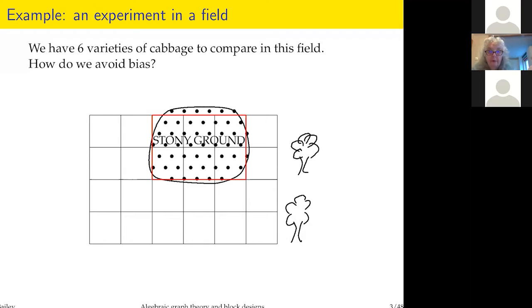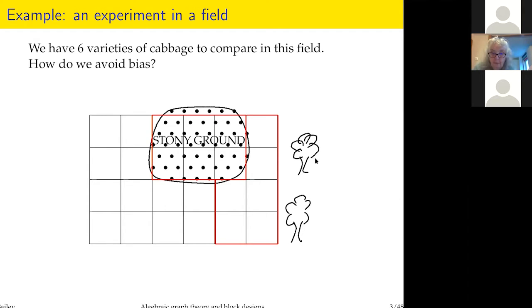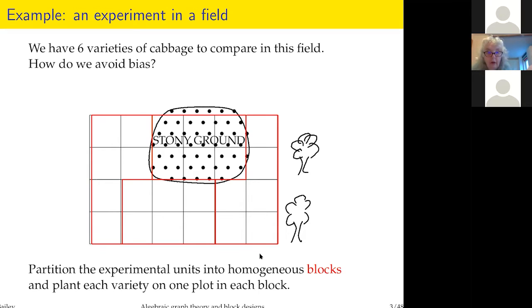Stony ground might be a bit different, so let's choose six plots there and make a block. At the edge of the field you can see some trees, and we knew from experience that there were crows living in them that would sometimes come in and eat the crop. So the plots at that end of the field might be a bit disadvantaged. I then put six and six in close together.